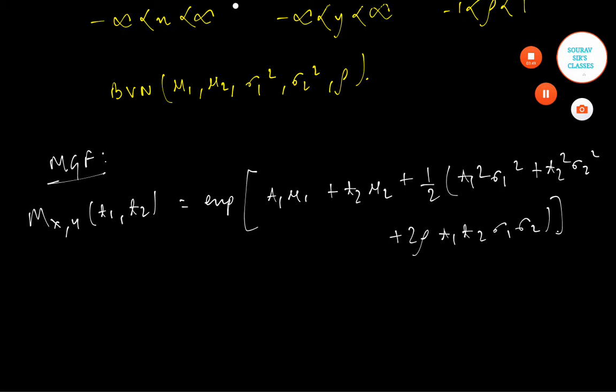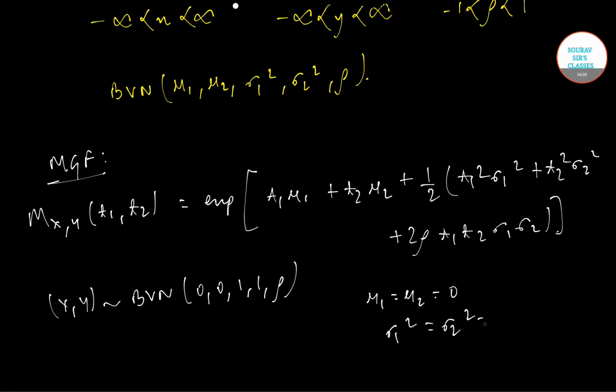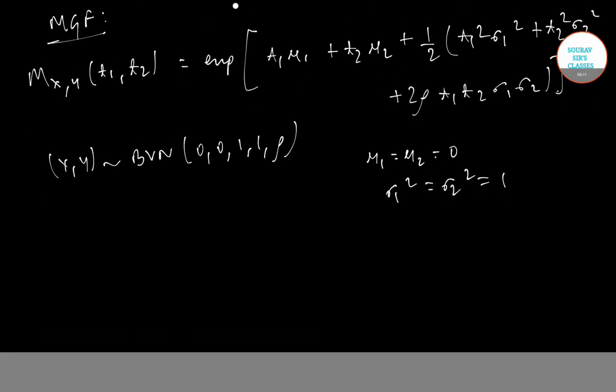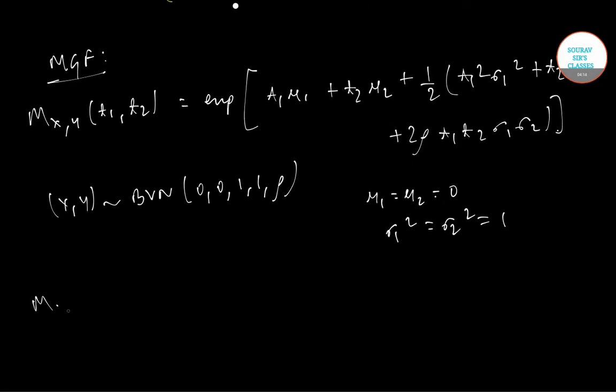In particular, if X,Y follow BVN(0, 0, 1, 1, ρ), that is μ_1 = μ_2 = 0 and σ_1² = σ_2² = 1, then the MGF is given as exp[1/2(t_1² + t_2² + 2ρ t_1 t_2)].